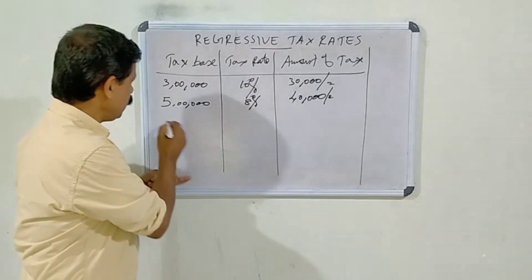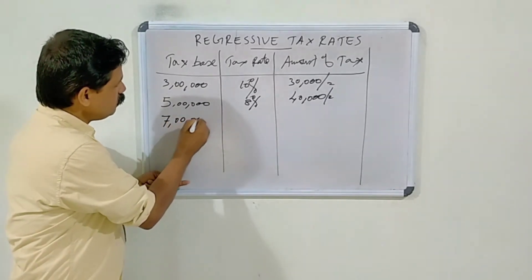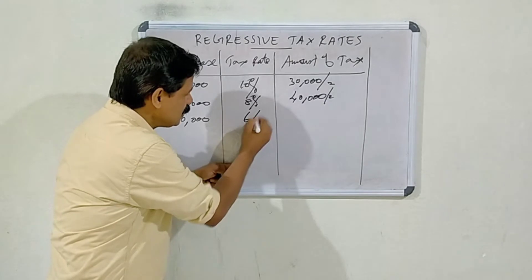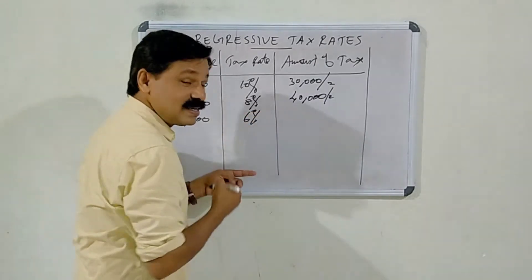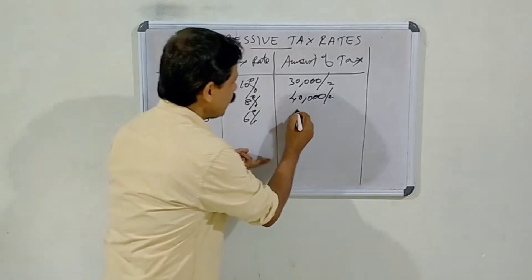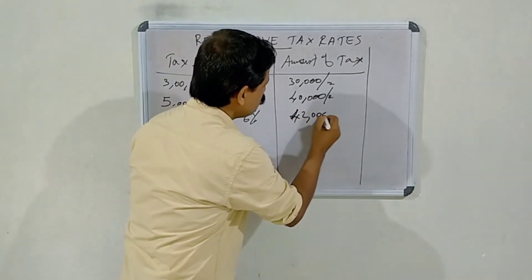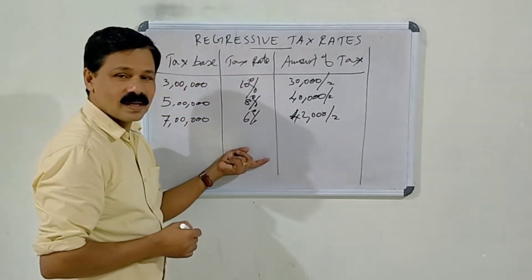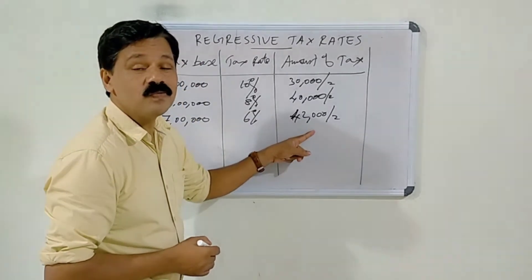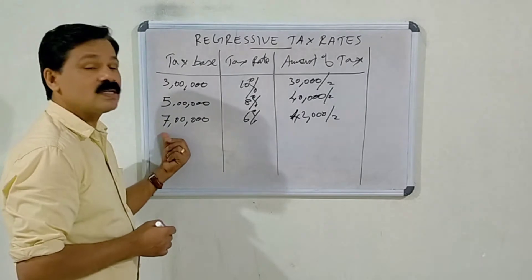Again, if income increases from 5 lakhs to 7 lakhs, the rate of taxation diminishes and decreases from 8% to 6%. Here, the taxpayer has to pay 42,000 rupees to the government in the form of personal income tax, that is 6% of 7 lakh rupees.